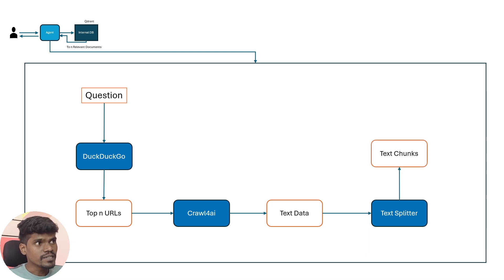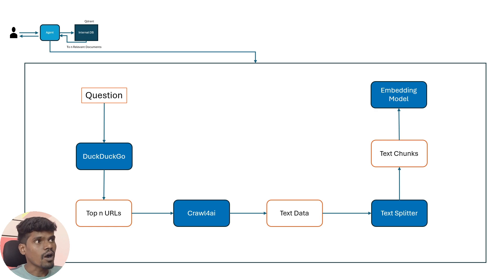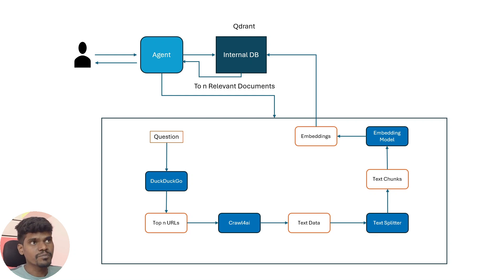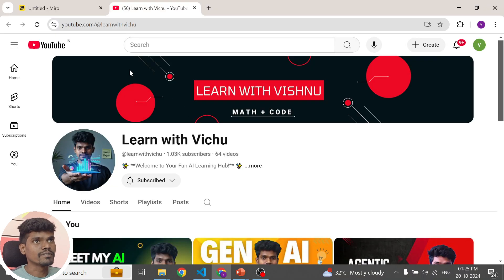After splitting the data into smaller chunks, we have to convert these chunks into embeddings using an embedding model. After converting these chunks into embeddings, we have to store them into the internal database — specifically the Qdrant vector database. Once we have enough information in our vector database, we will be able to retrieve the relevant chunks and provide answers to the user's questions. So this is the logic behind this agent.